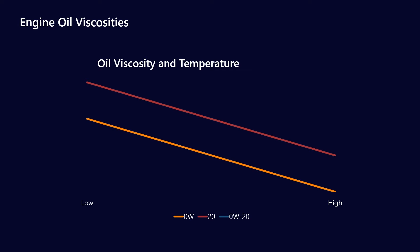Now when we talk about multigrade oils we mean something that looks like a 0W at low temperatures and looks like a 20 weight at high temperatures and therefore we would call it a 0W-20. That is a multigrade oil.